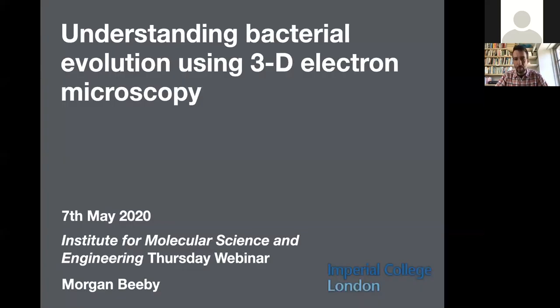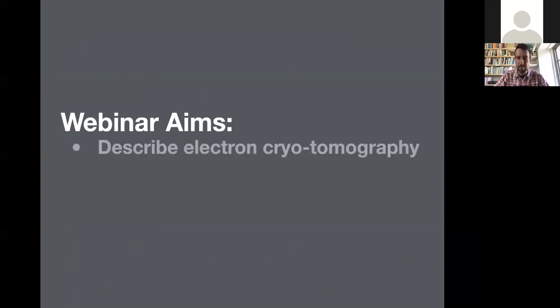What I'm going to be talking about today is understanding bacterial evolution using 3D electron microscopy techniques. This is from the developing field of electron cryotomography, which is enabling us to see the molecular structure of biological machines as they are inside living cells. So just to put this in context for the webinar.